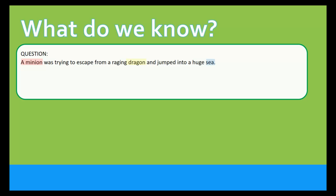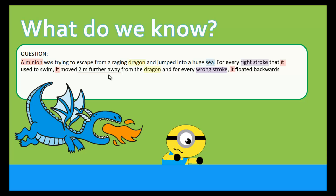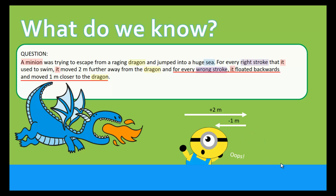Now that we're done with the warm-up, let's dive into the question and understand what each sentence is telling us. The first sentence — a minion was trying to escape from a raging dragon and jumped into a huge sea — is fairly simple. If you were chased by a flame-blowing dragon, you'd probably run away too. Next: for every right stroke, it moved 2 meters further away from the dragon, and for every wrong stroke, it floated backwards and moved 1 meter closer to the dragon. For every correct stroke, the minion moves forward; for every wrong stroke, it changes direction and moves toward the dragon.